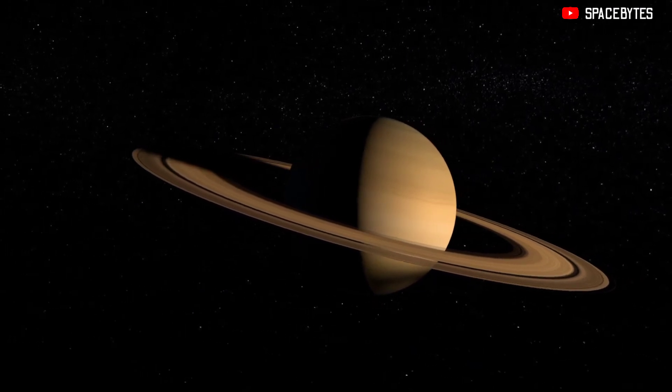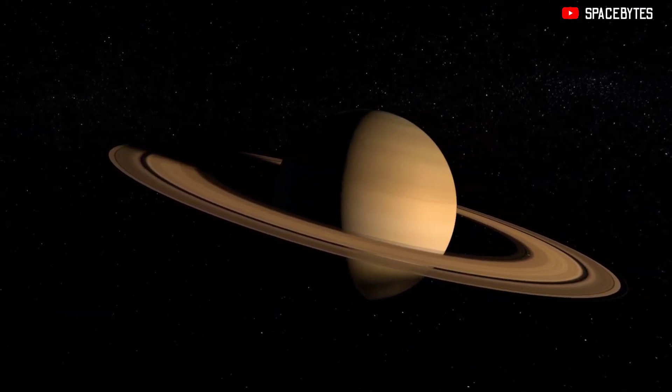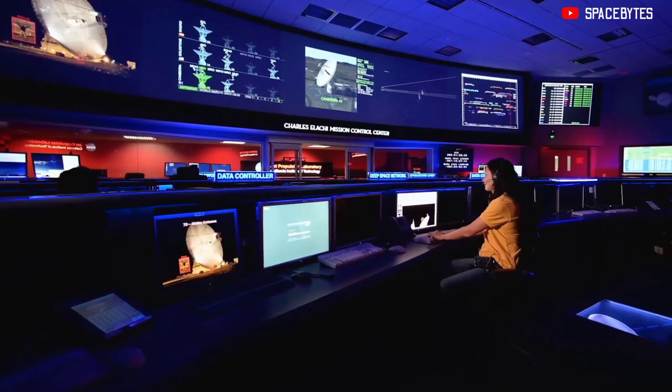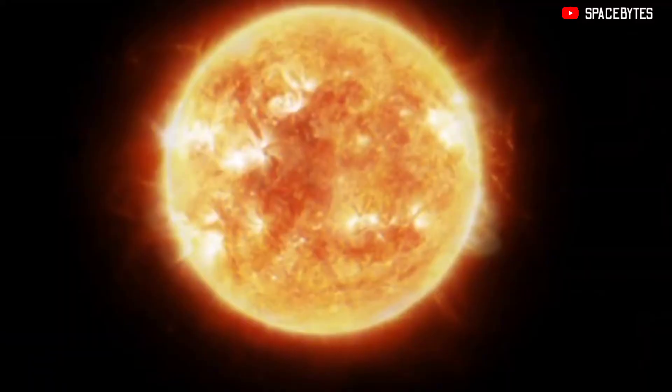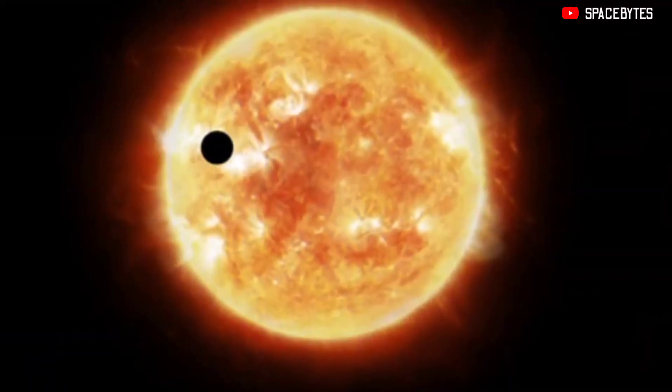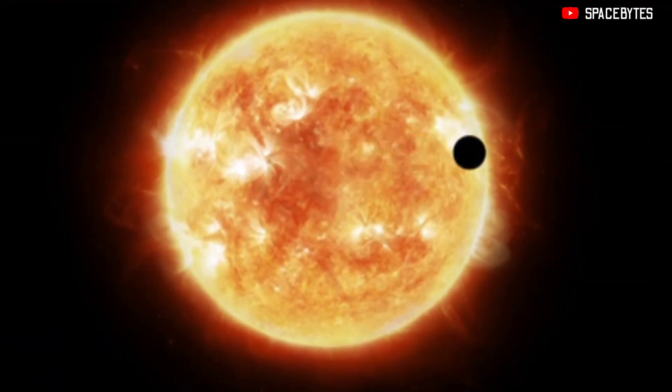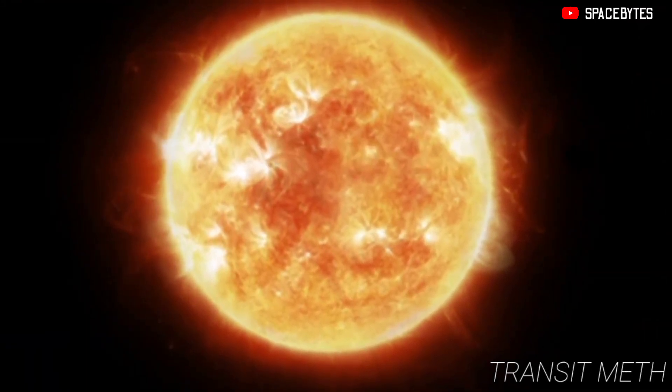How did astronomers discover this amazing planet? First you need to know the method used for detecting exoplanets, which means planets outside our solar system. Most exoplanets are detected using something called the transit method.